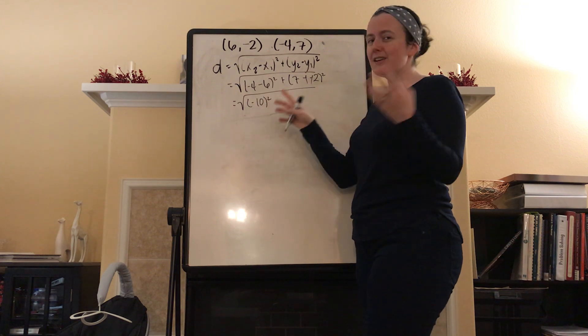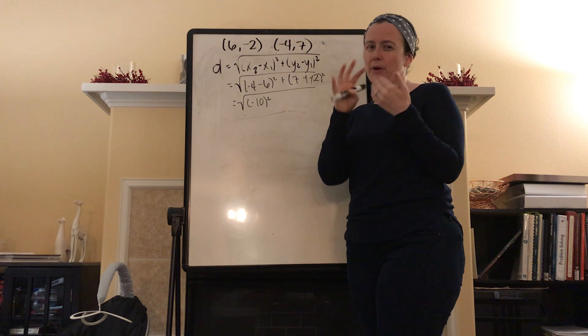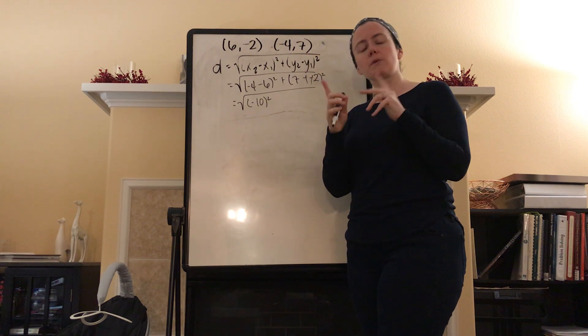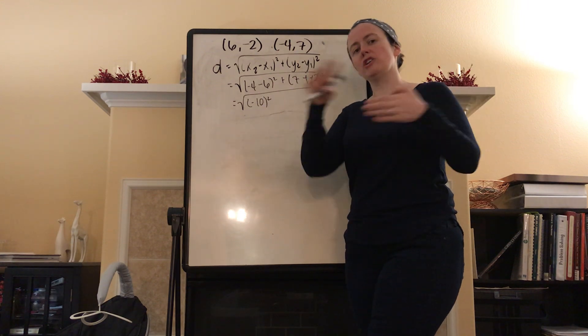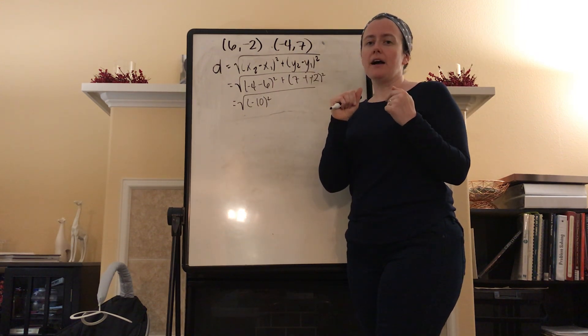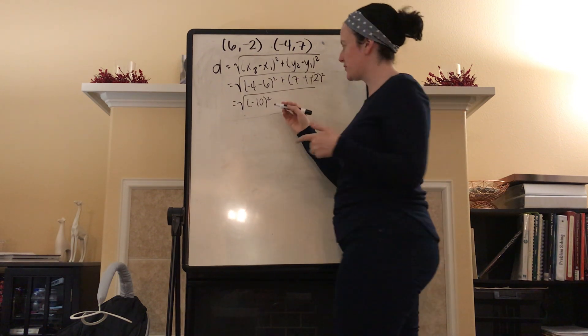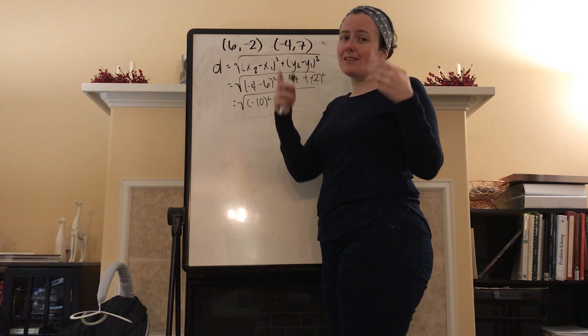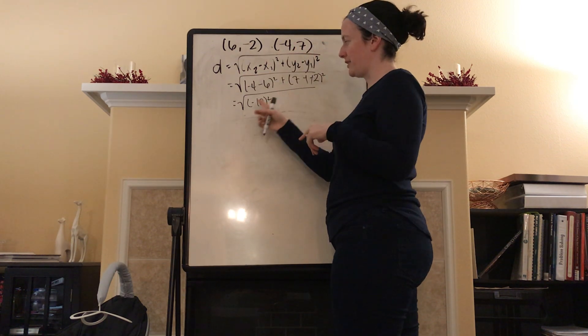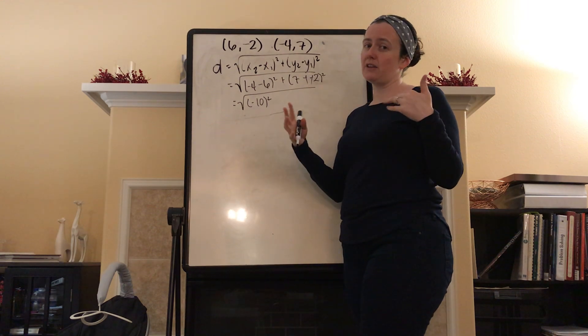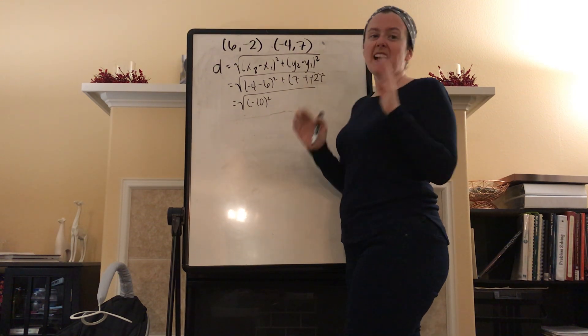So the negatives are always going to end up canceling themselves out in the distance formula because no matter whether it's positive or negative, you're going to square the whole number. You're going to square all of it and that's going to get rid of any of your negatives. So make sure that you're writing them in the parentheses so that you remind yourselves that it's also going to be squared and you're not going to leave that negative hanging out and then accidentally have a negative and then tell me you can't find the distance between the points because you can. It's not imaginary.